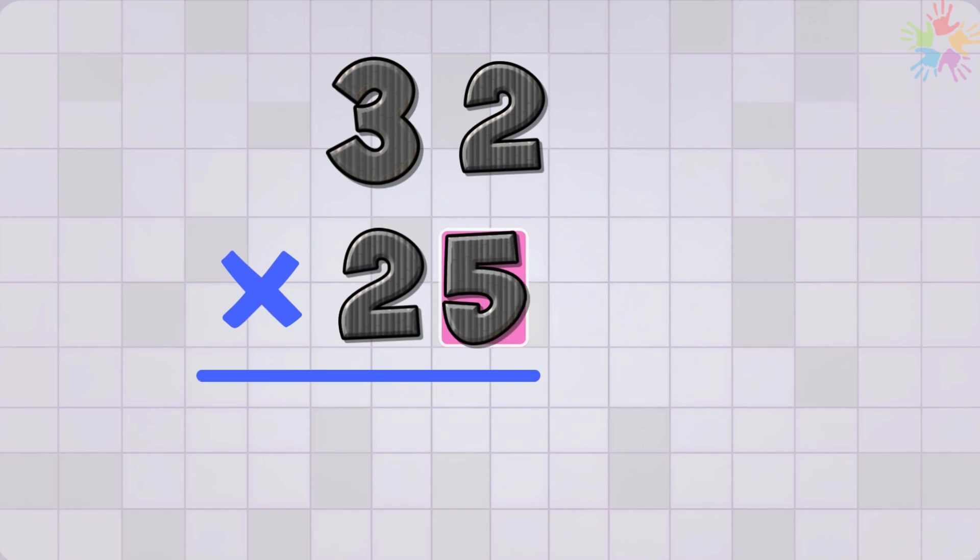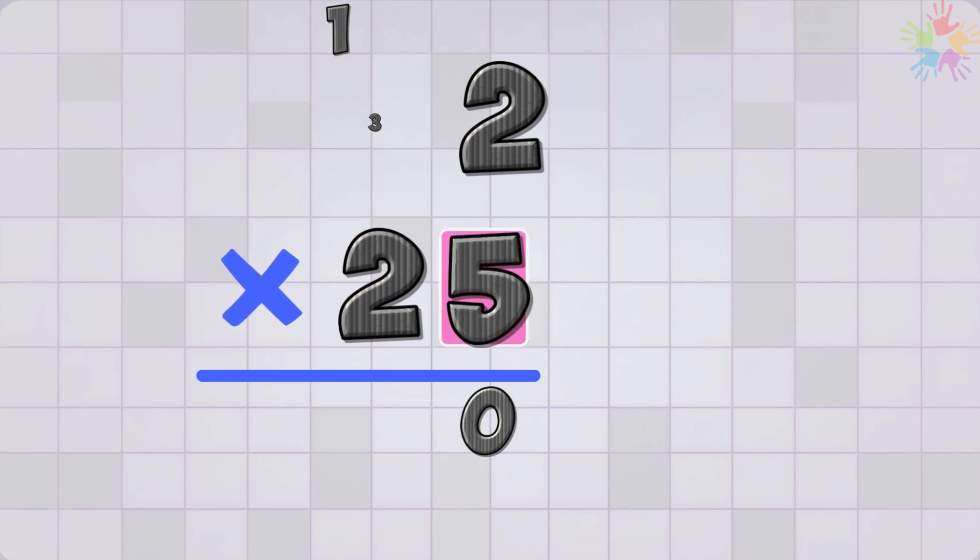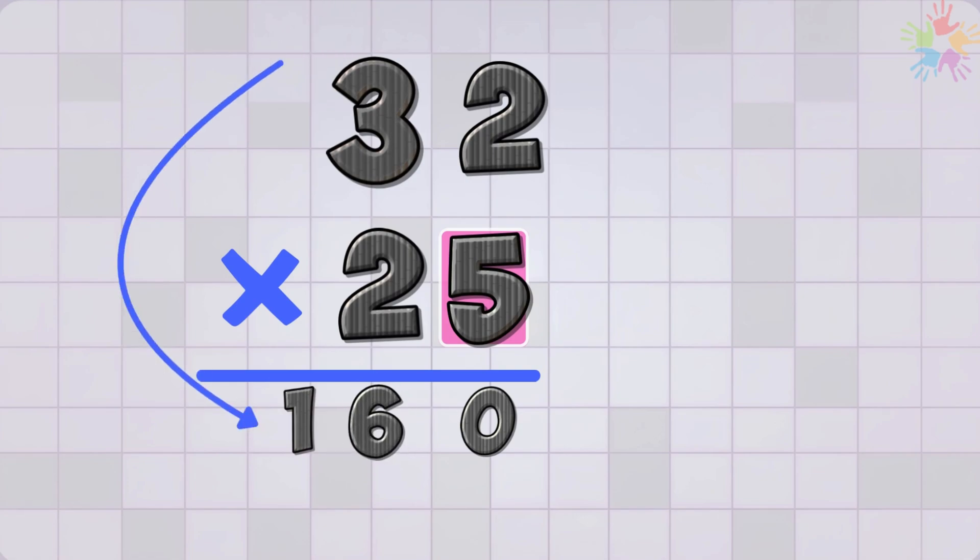5 times 2 is 10. Write down 0 and carry 1 on top of the 3. Now 5 times 3 is 15. Add the 1 we carried that makes 16. So our first row is 160.